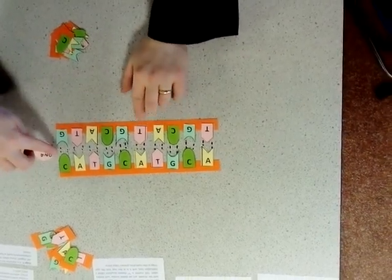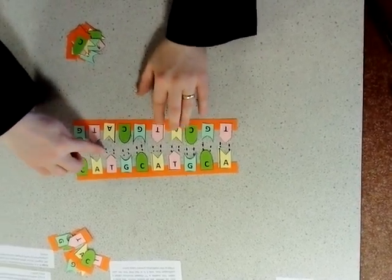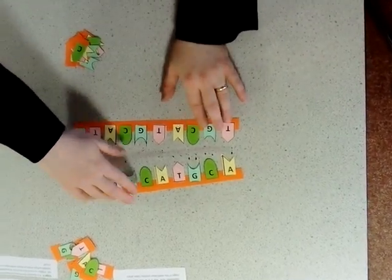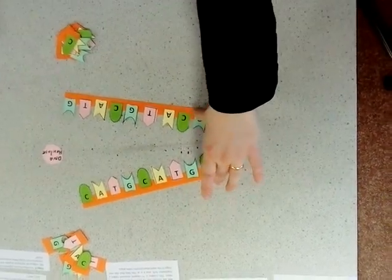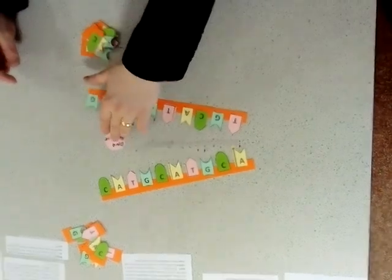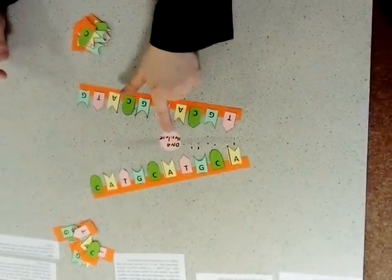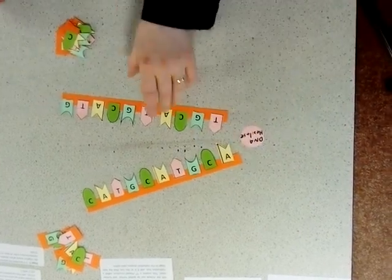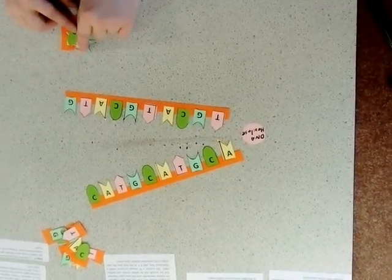It moves along and breaks these weak intermolecular bonds or intermolecular forces in between the nucleotides, so it opens it up into this fork shape. Now we've got a fork shape. Once we've got that shape, then complementary base pairs will go and match up.